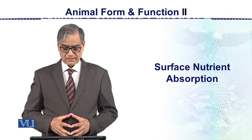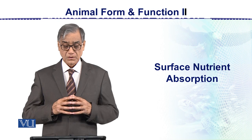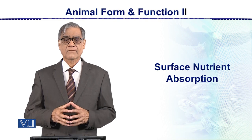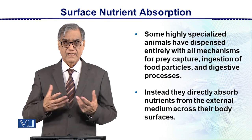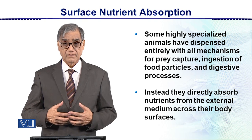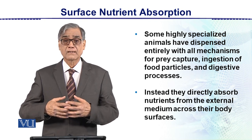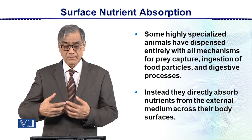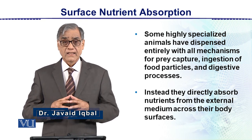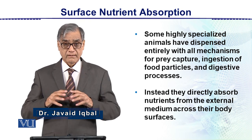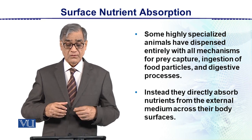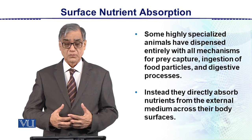In this module we talk about surface nutrient absorption. This is another strategy for animals. We see that animals have specializations. Most animals get food, ingest food, chew and then digest it — this is an advanced digestive system. But these animals, which we categorize as surface nutrient absorbers, absorb food from the surface of the body.